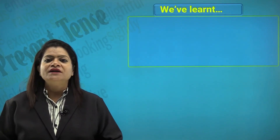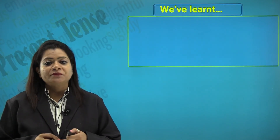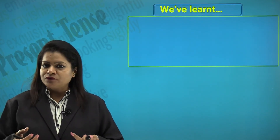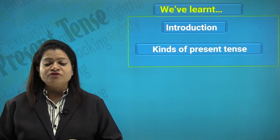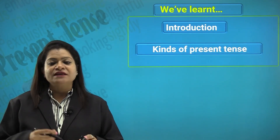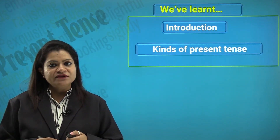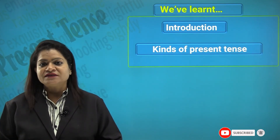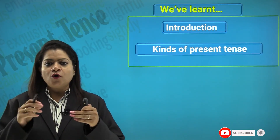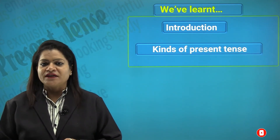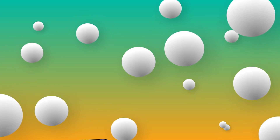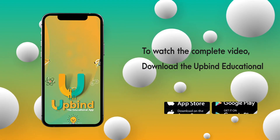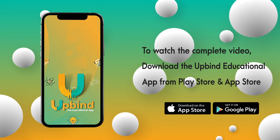So what have we learnt in this module? We talked about the present tense and its four types: the simple present tense, present continuous tense, present perfect tense, and present perfect continuous tense. Hope you've had fun learning with us. Thank you. To watch the complete video, download the Upbind educational app from the Play Store and App Store.